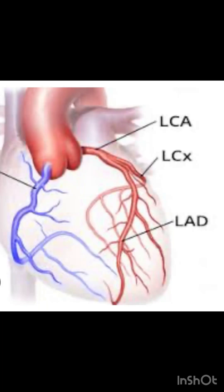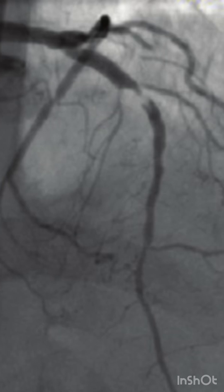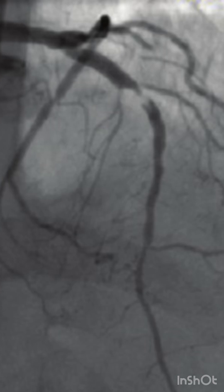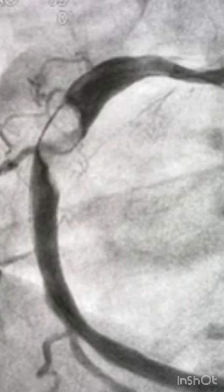In my previous video I discussed the coronary arteries and their branches. In today's session, we'll look at the risk factors that can lead to blockage in the coronary arteries. There are two factors affecting the heart arteries: non-modifiable risk factors and modifiable risk factors.